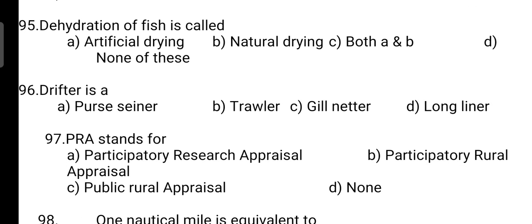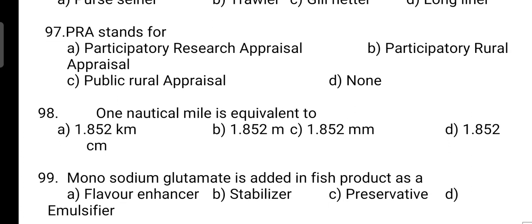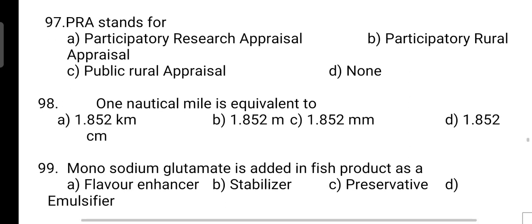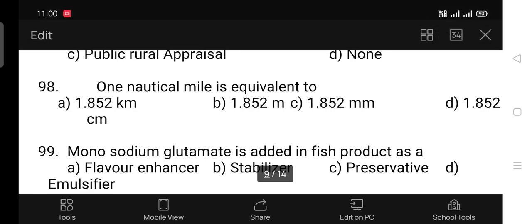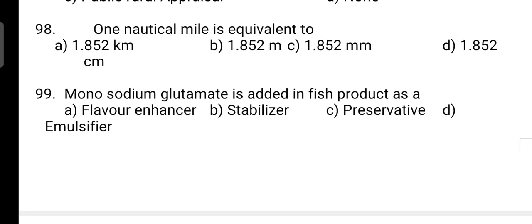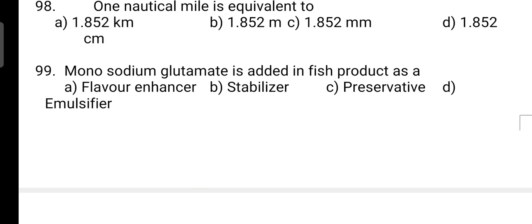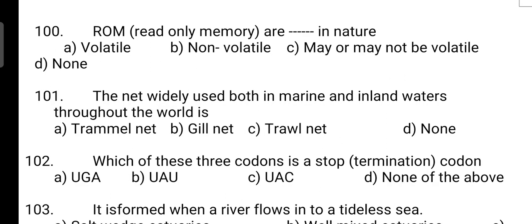In the ecosystem, the biomass of producers is less and those of consumers is more: correct answer is Option C — it leads to an inverted pyramid. Next, dehydration of fish is called: correct answer is Option A — it is artificial drying. Drifter is a: correct answer is Option C — it is a gill netter. PRA stands for Participatory Rural Appraisal — Option B is correct.